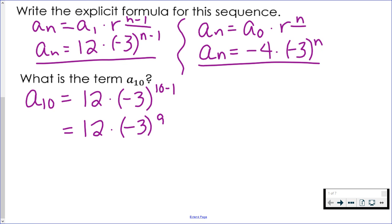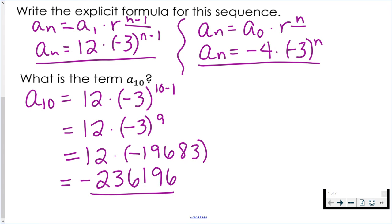Start by figuring out the exponent. Ten minus one is nine. And then according to the order of operations, you have to do negative three to the ninth power before you multiply by 12. So once you raise negative three to the ninth, that's when you can multiply. So negative two hundred thirty six thousand one hundred ninety six is the tenth term.